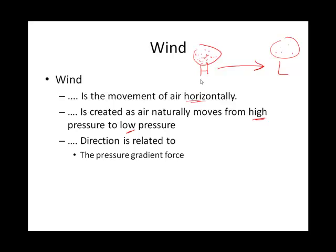As I've drawn the high and the low and an arrow from the high to the low, that arrow represents what we call the pressure gradient force — abbreviated PGF. Anytime you see those three letters, they're talking about the difference in horizontal pressure, high and low, and basically an impetus for air to move from high to low pressure, creating a wind.